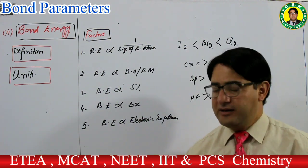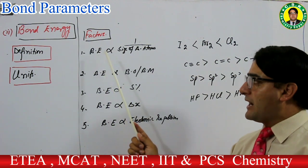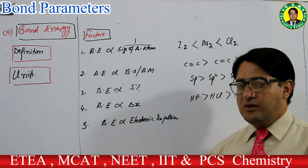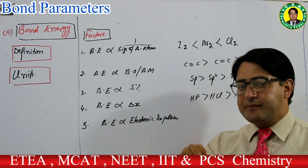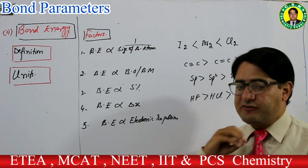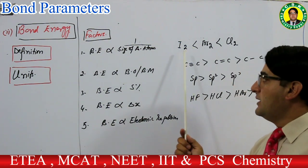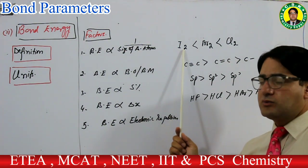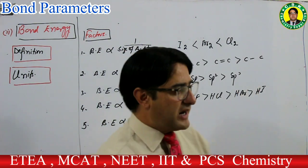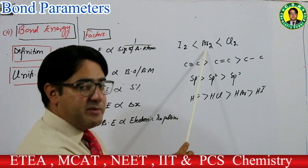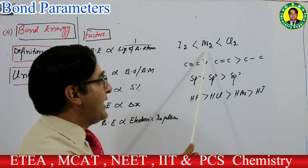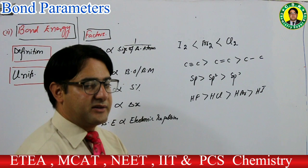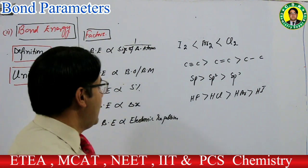Bond energy کے factors: پہلا factor — size of bonded atoms۔ Bond energy کا bonded atoms کے size کے ساتھ inverse relation ہے۔ For example: iodine molecule میں atoms کا size بڑا ہے تو bond energy کم، bromine میں زیادہ، chlorine میں اور زیادہ۔